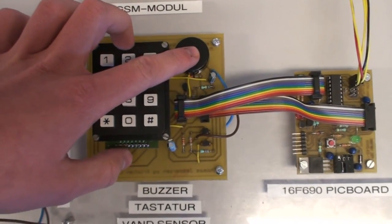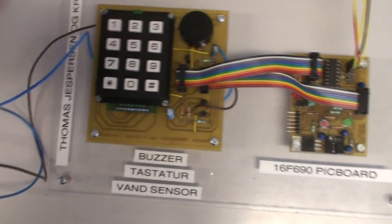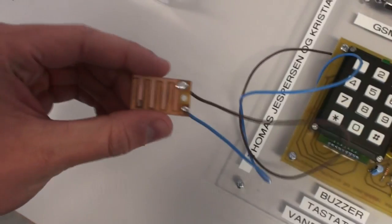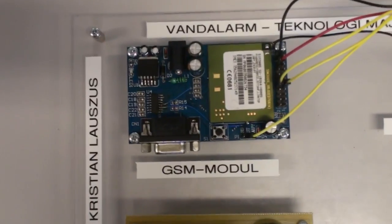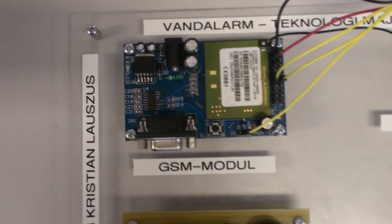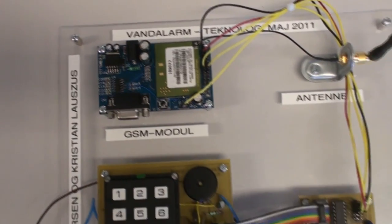It has a buzzer and a water sensor using two transistors, and then a SIM300 GSM module connected to the PIC using UART.